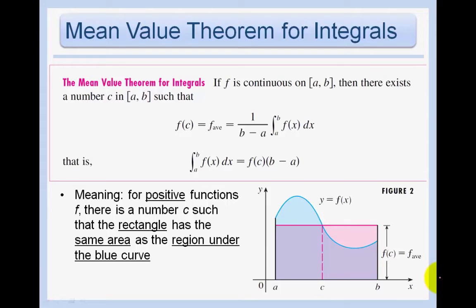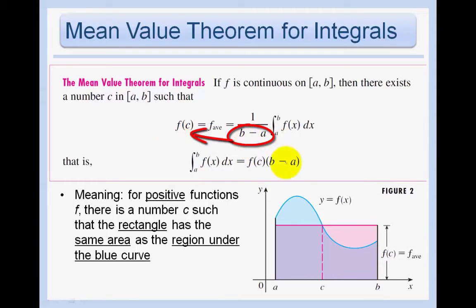Here's a graphical interpretation. The Mean Value Theorem for Integrals is saying there is some f of c that equals the average value of the function. If we just multiply both sides by b minus a, then we get the integral from a to b of f of x dx equals f of c times b minus a. The graphical interpretation is saying there must be some f of c such that f of c times b minus a is just the area of that rectangle — the height is f of c and the width is b minus a. So the area of this rectangle is equal to the area under the curve.